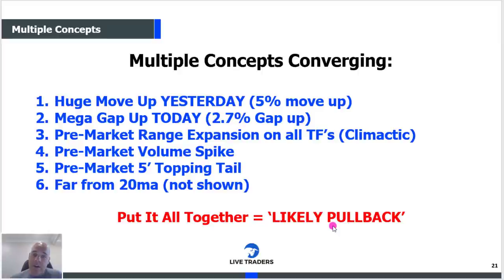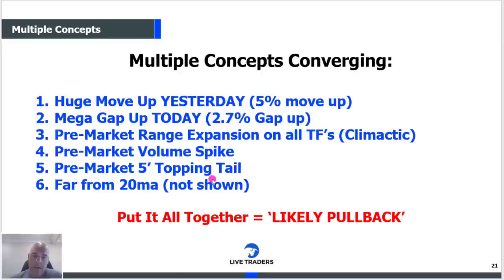That 16-bar move on the 60-minute chart should have been your first inclination — the market is either going to be narrow range or pull back, even before you saw the gap. Let me repeat that: the 16-bar move up on the 60-minute chart should have told you tomorrow is going to be a narrow range inside day or a pullback day. Then when you woke up and saw a 2.7% gap up, you should have thought, 'Holy cow, market's pulling back today — like 97 to 99% chance.' Then the pre-market chart confirmed it: range expansion, volume, topping tail, far from the moving average. It all lined up really nicely.